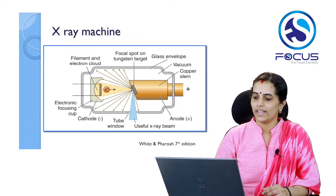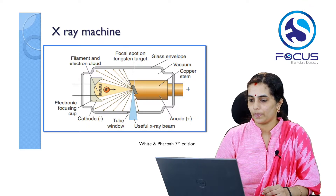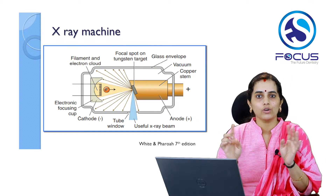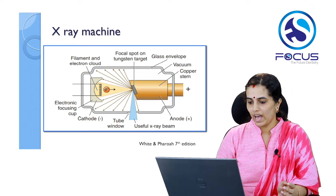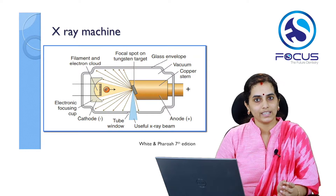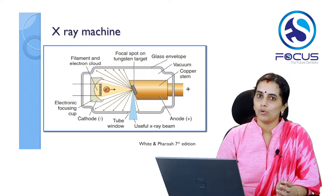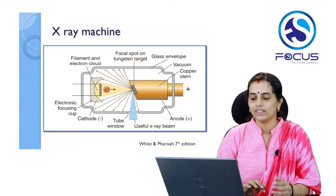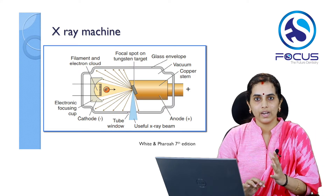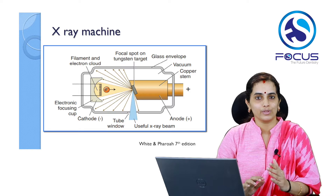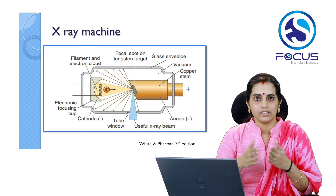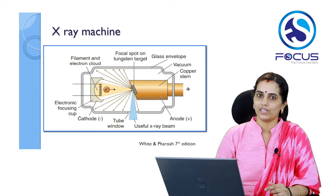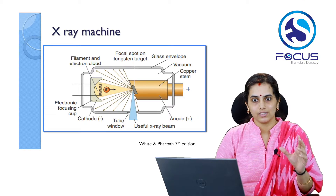Now let us look at the X-ray machine and its parts. The X-ray machine comprises a negatively charged cathode and a positively charged anode enclosed within a glass envelope. The cathode has a tungsten filament, 2 mm in diameter and 1 cm or less in length, attached to the power supply and embedded within a molybdenum focusing cup. When a high voltage is applied, the filament heats to incandescence, producing electrons. The parabolic-shaped molybdenum focusing cup focuses the electron beam to a narrow beam onto the focal spot.